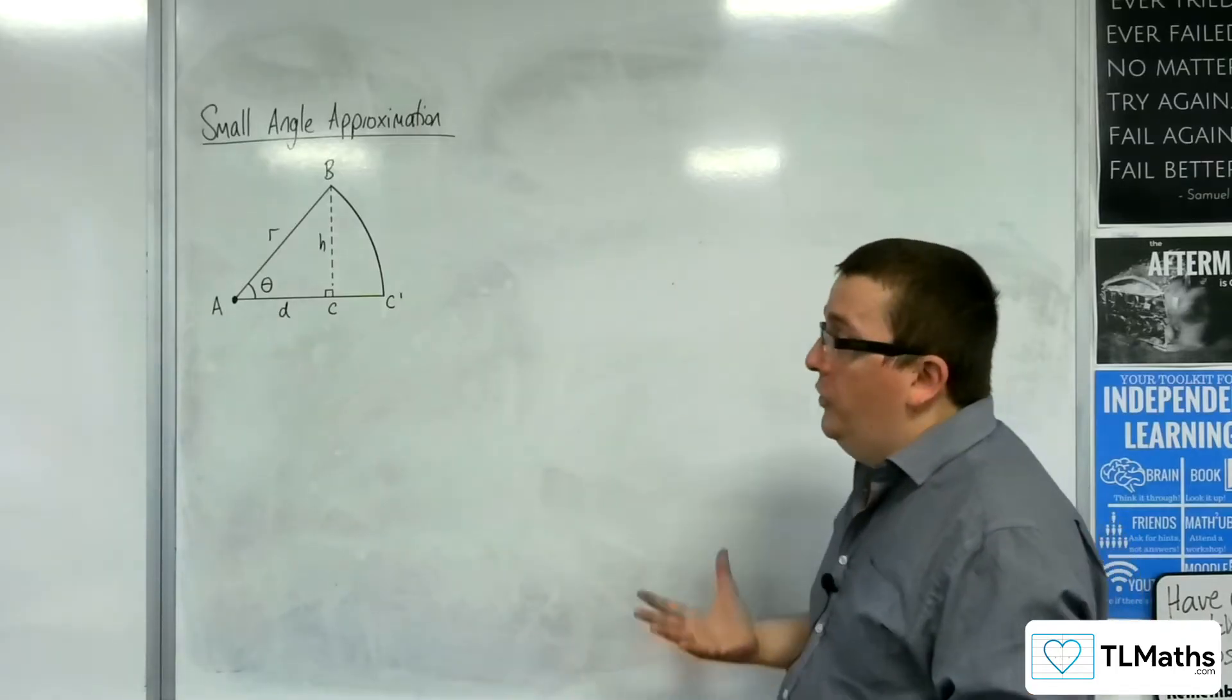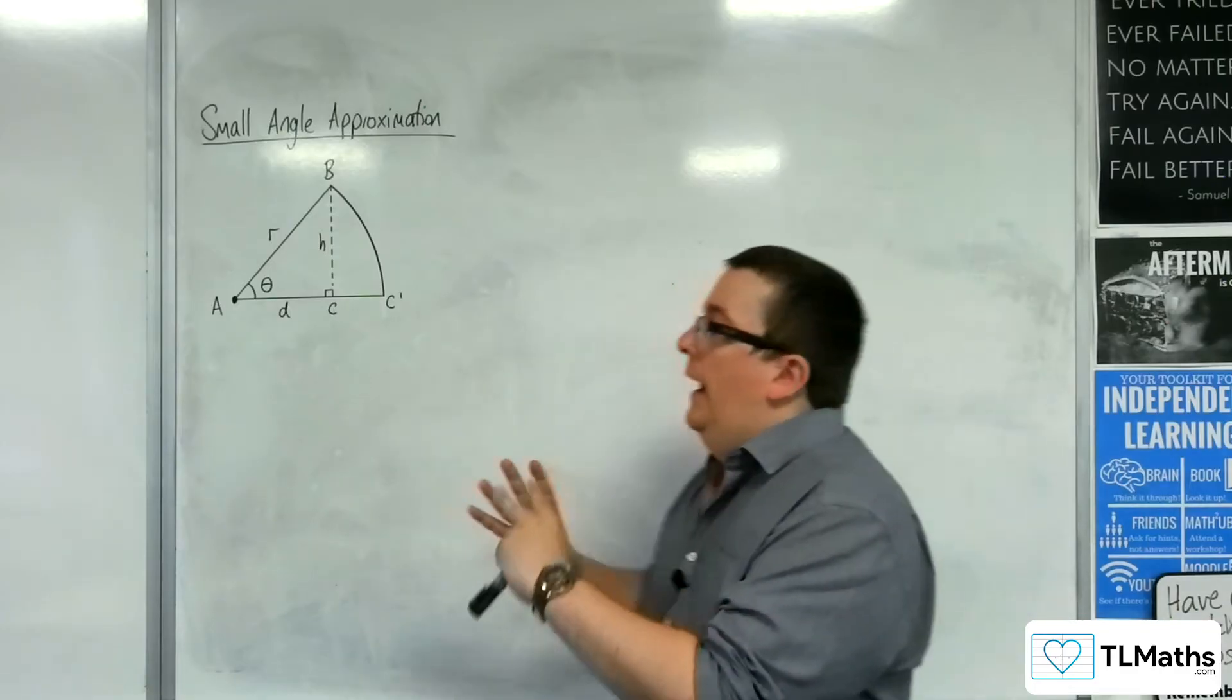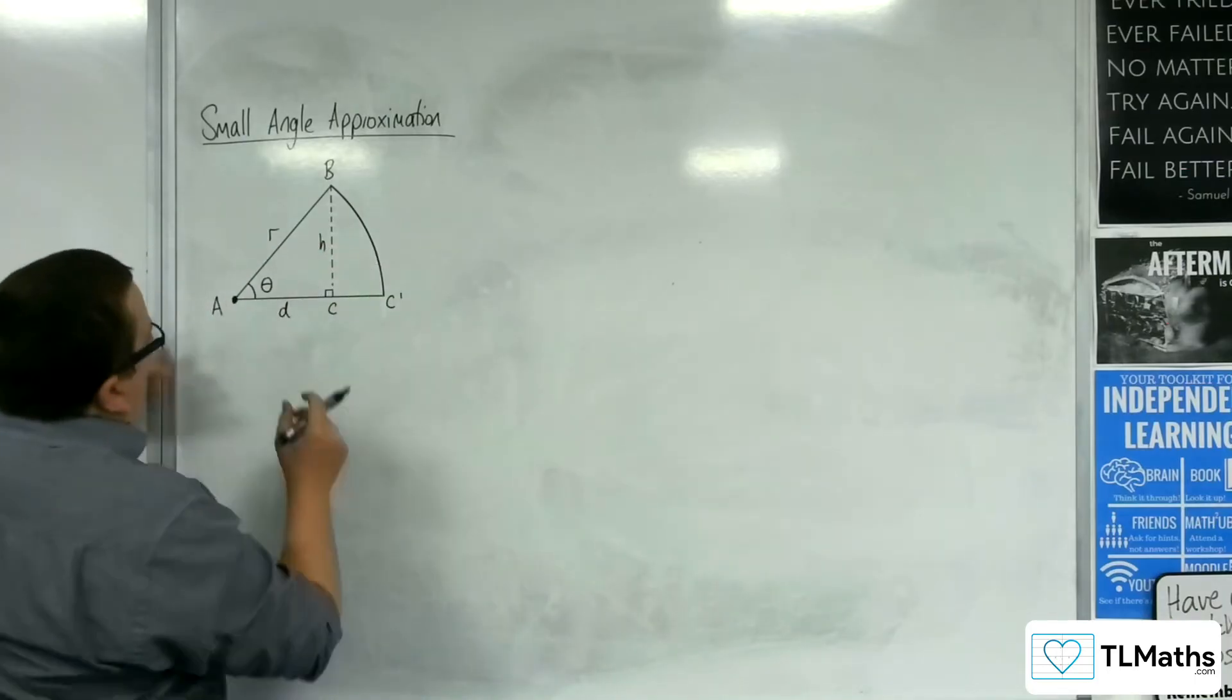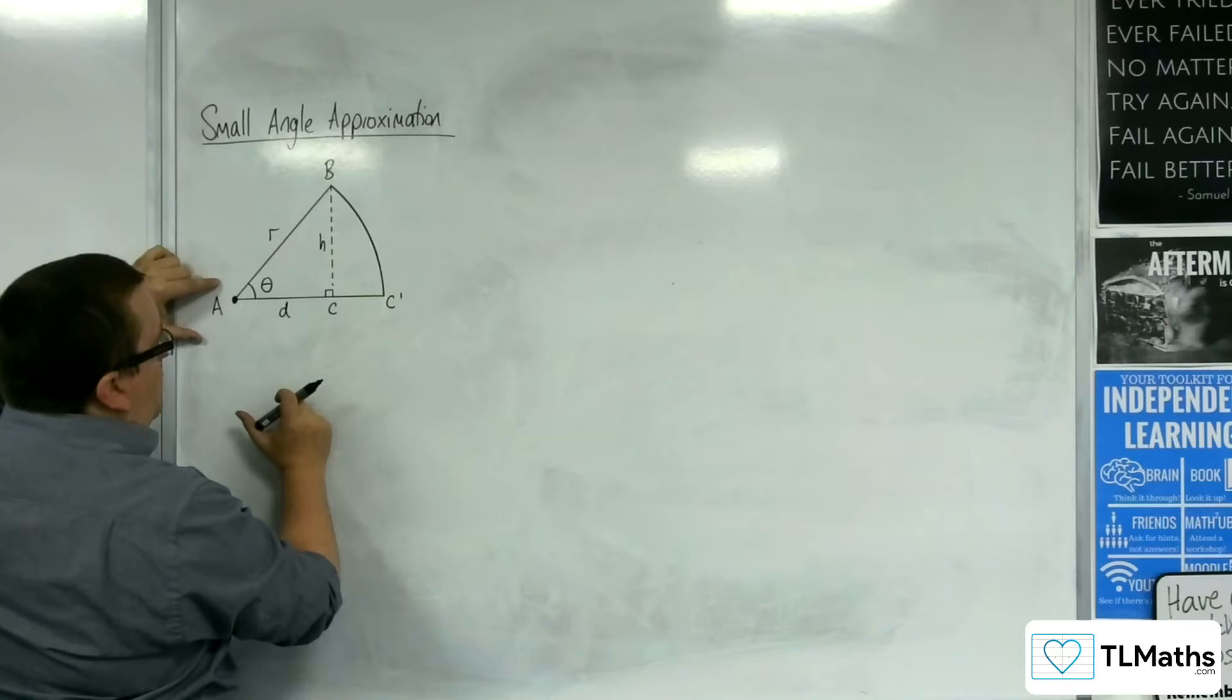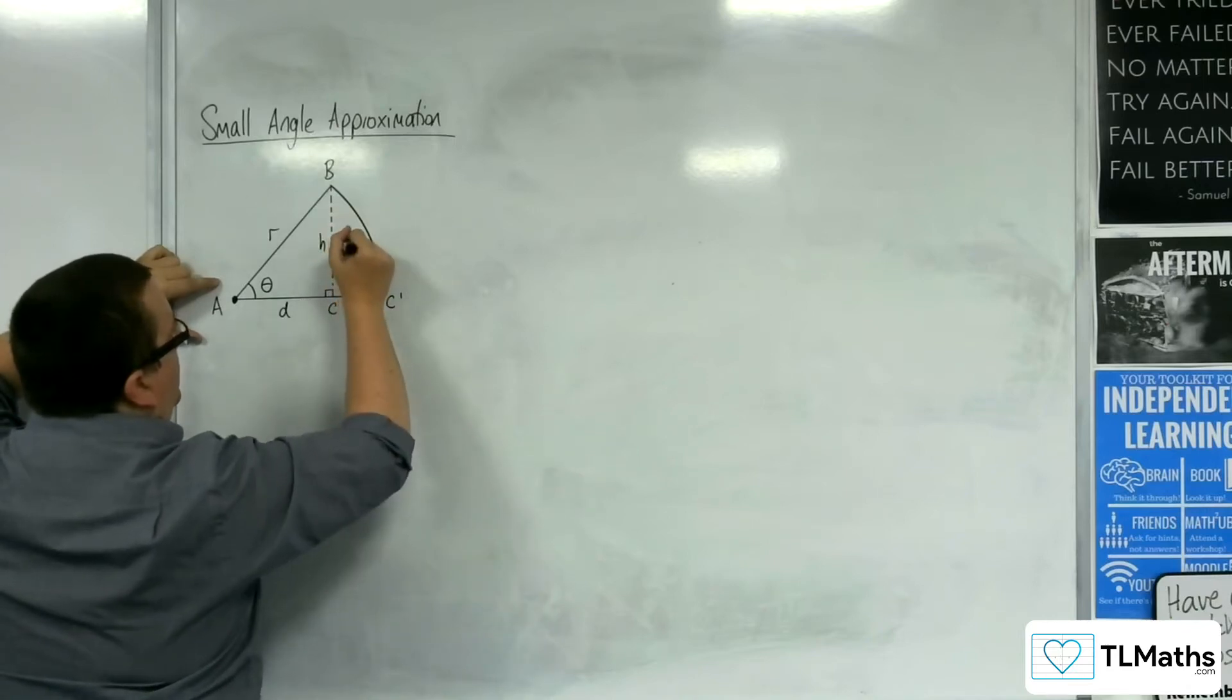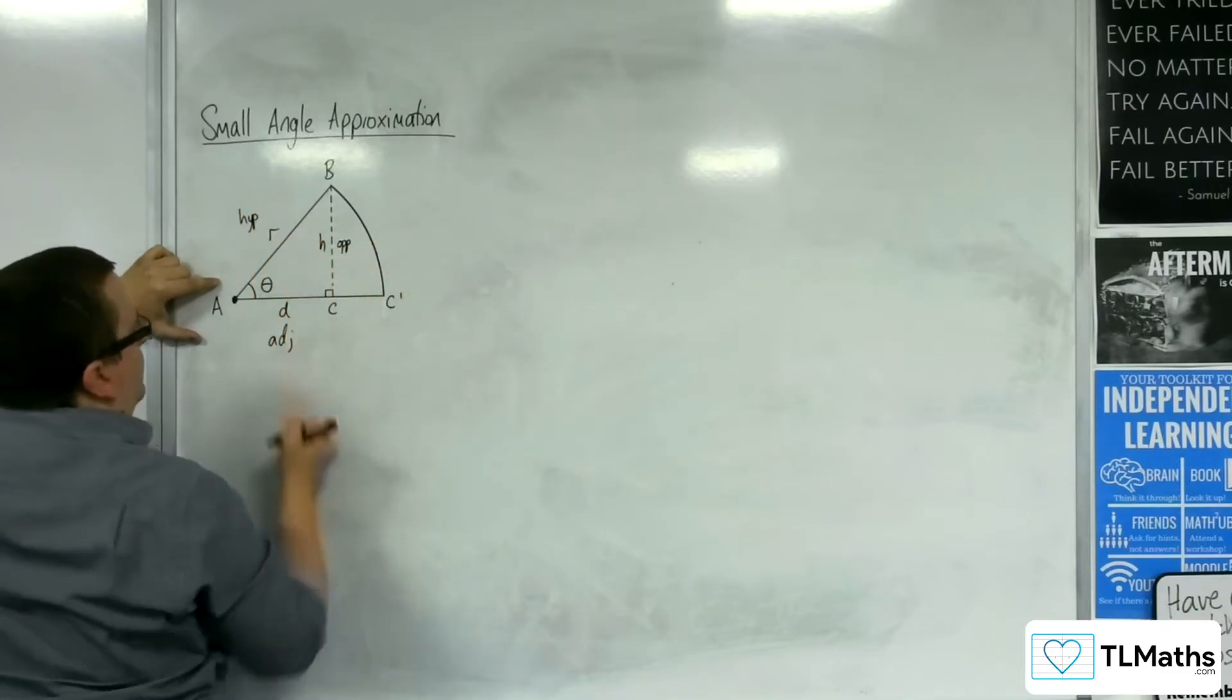Now the first thing that we're going to do is we're going to focus in on that right-angled triangle, and we can say to ourselves that for this right-angled triangle, if this is the angle that I'm interested in and looking at, then this would be the opposite side, this would be the hypotenuse, and this would be the adjacent.